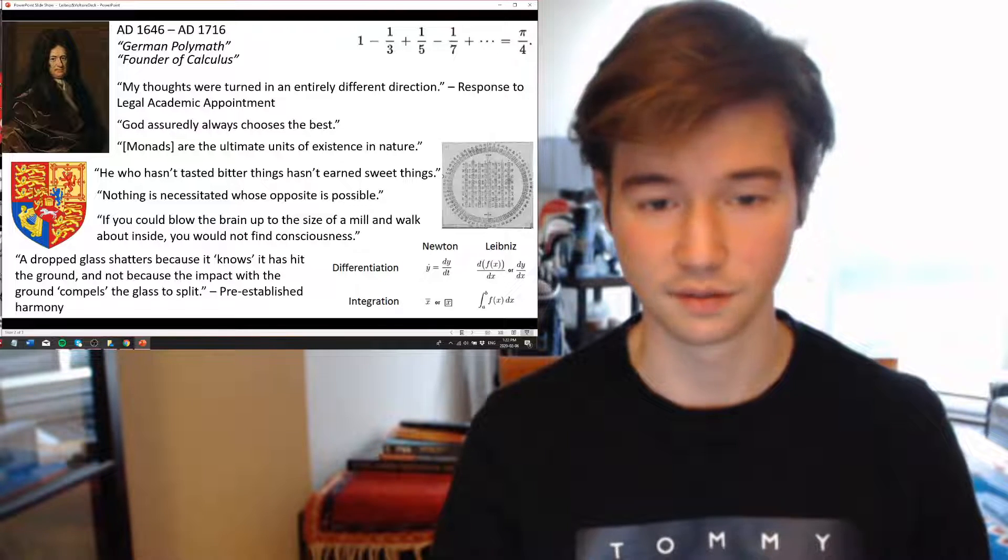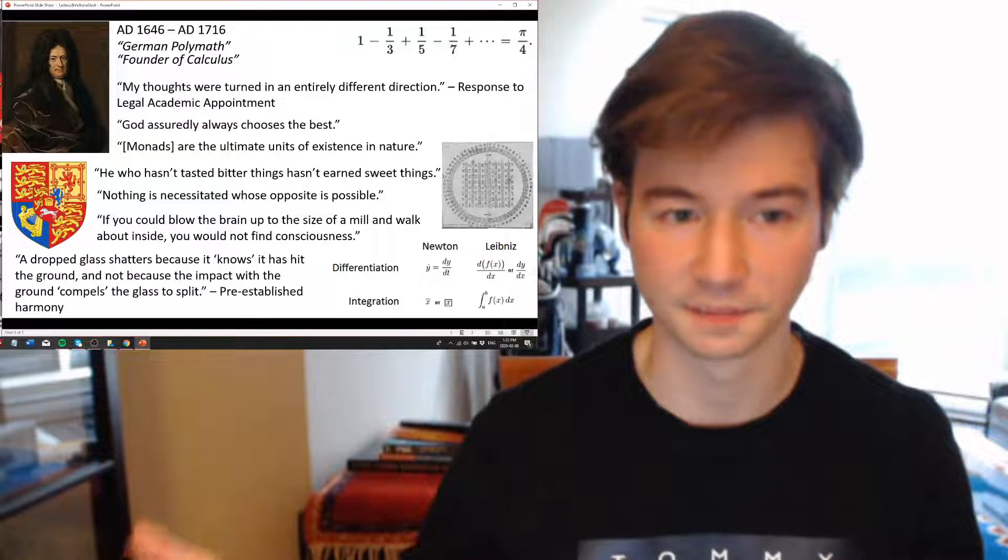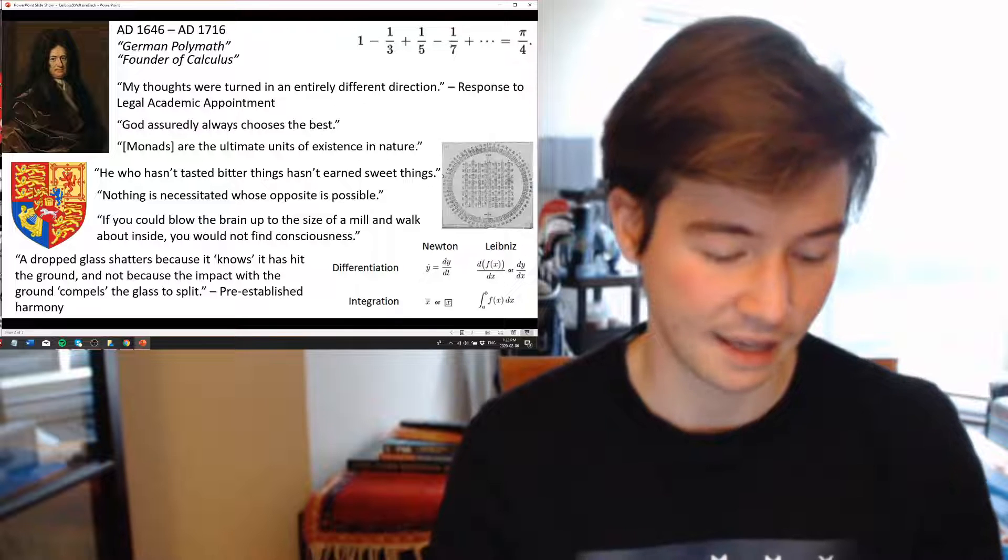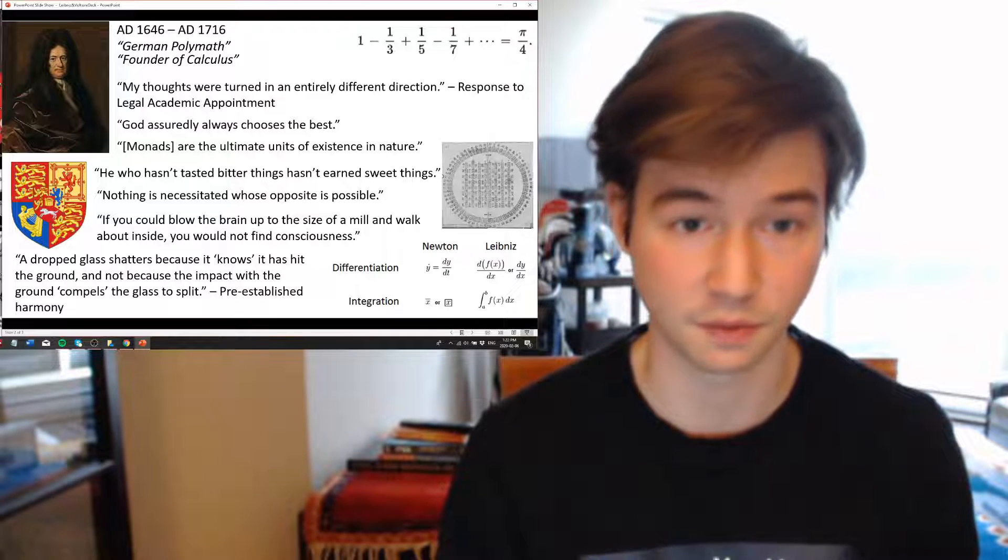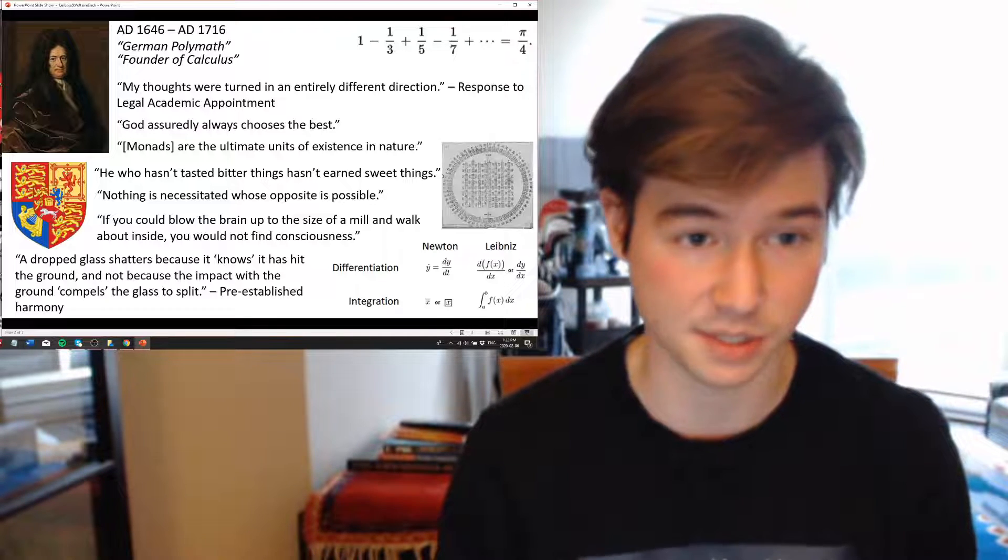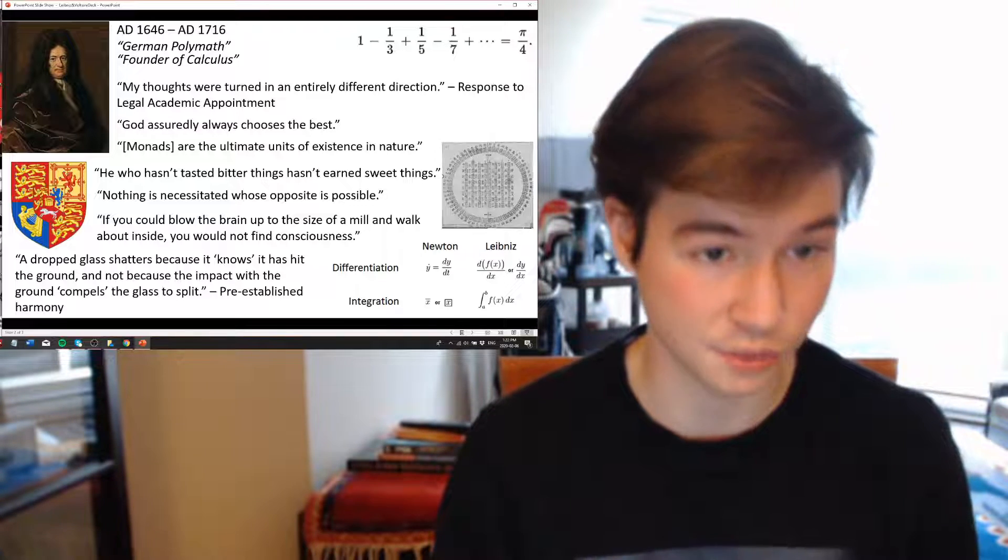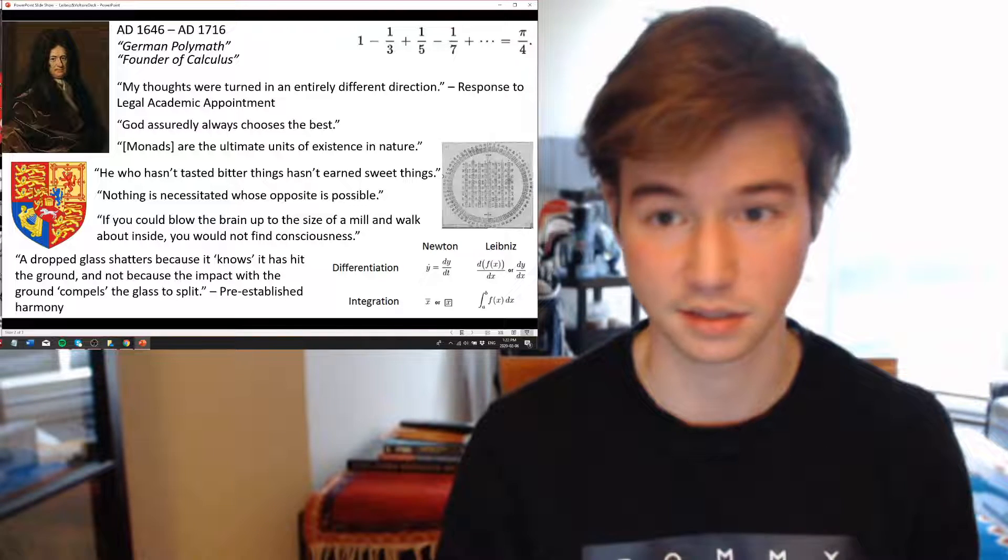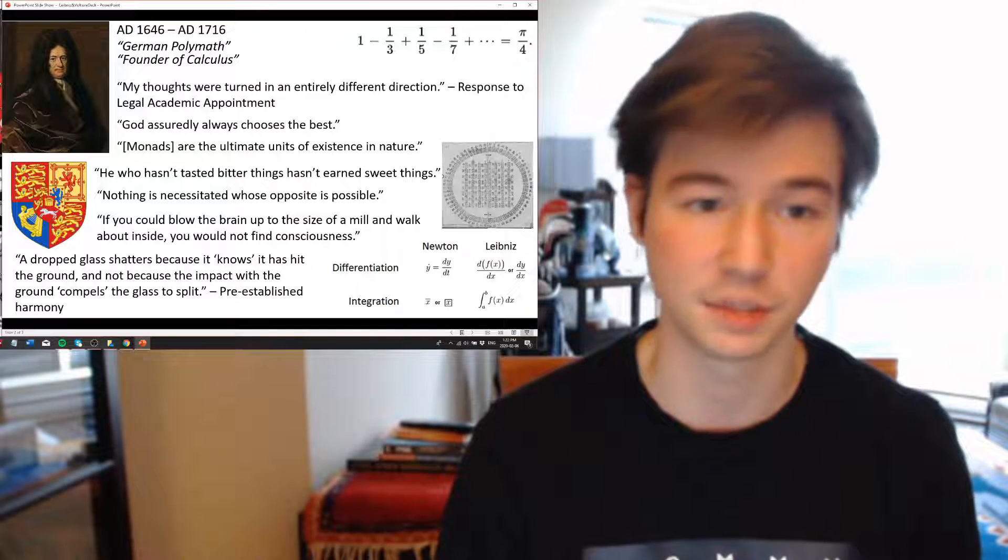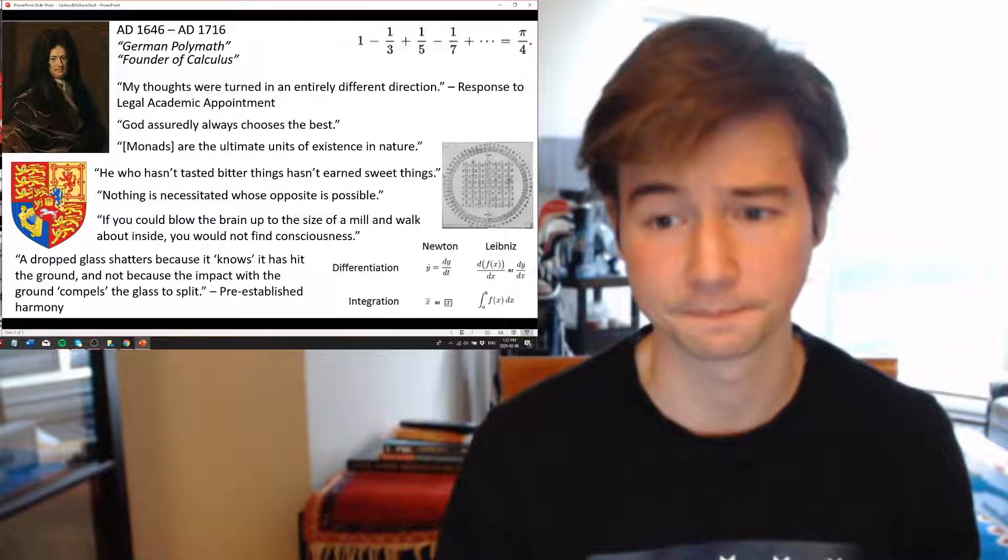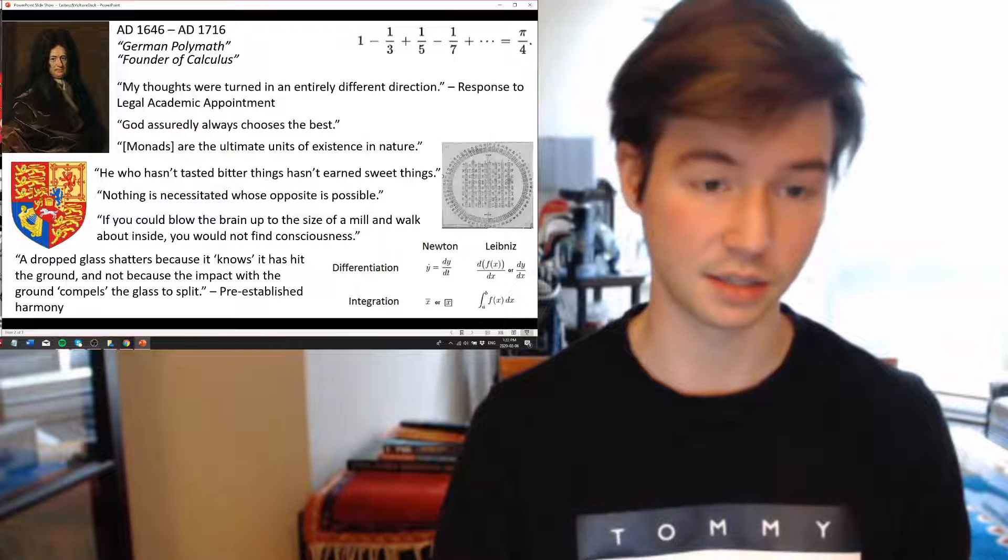In terms of his thoughts, to briefly go on it before moving to Voltaire, most importantly, I find his theory of optimism to be fascinating in that God created, always chooses his best, and the world is in. Since there is an infinite amount of ways it could have been arranged, it must have been done in the perfect way. We'll see how Voltaire sort of satirizes this, but I think it's a really interesting thought.